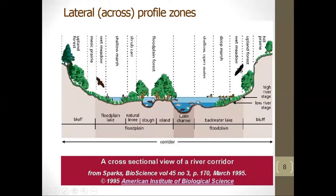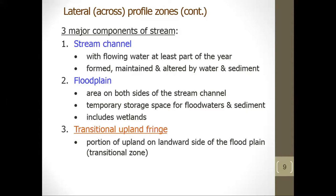Despite wide variation among streams, most stream corridors have three major components in cross-section: the stream channel, the floodplain, and the transitional upland fringe. The stream channel has flowing water at least part of the year. The floodplain is a highly variable area on one or both sides of the channel that is inundated with floodwaters at intervals ranging from frequent to rare. The transitional upland fringe is the portion of the upland on the landward side of the floodplain that serves as a transitional zone between the floodplain and the surrounding landscape.